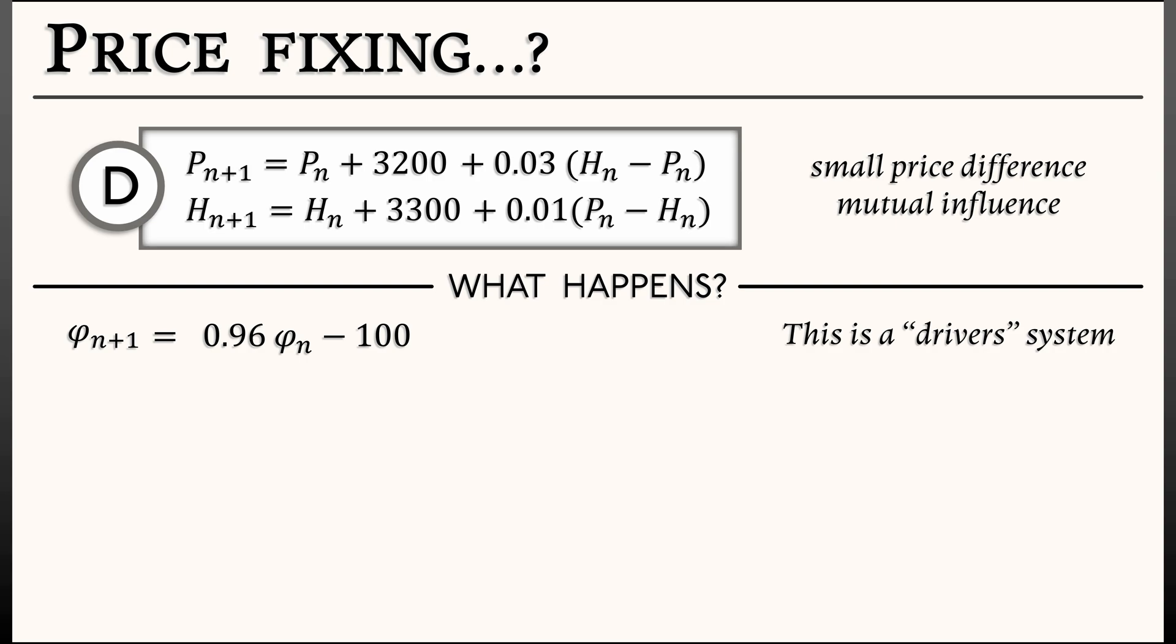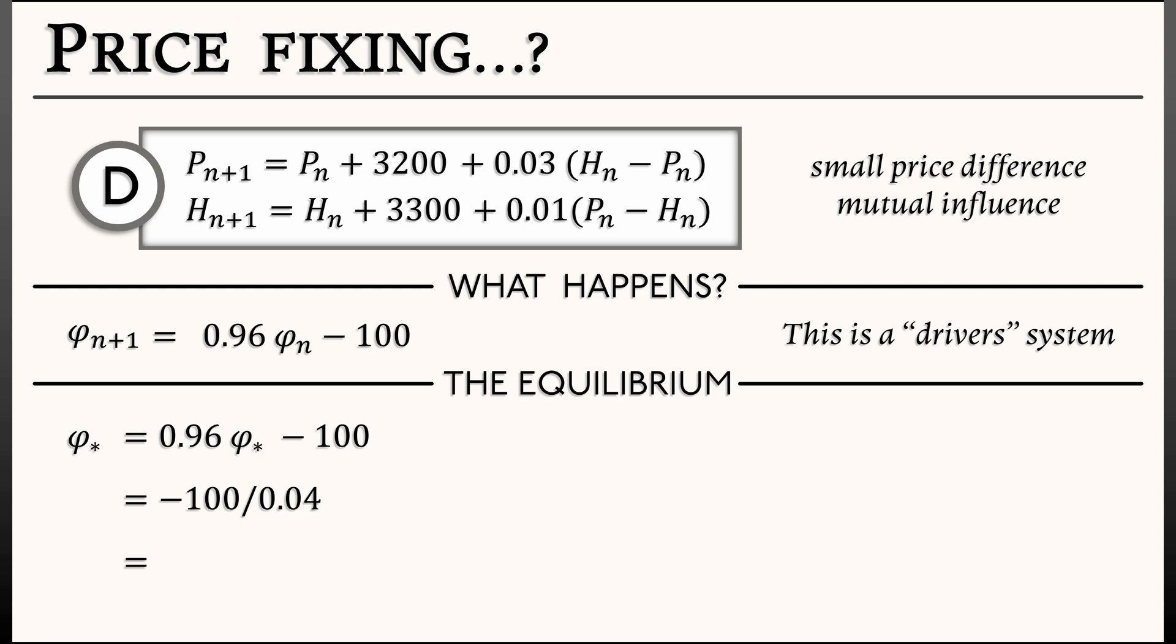Now, if we solve for the equilibrium, what do we get? The equilibrium phi star satisfies phi star equals 0.96 phi star minus 100. Do a little algebra. We get that phi star is negative 100 divided by 0.04. That is negative 2,500.